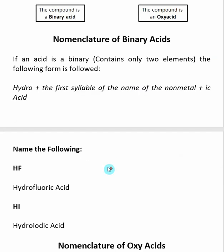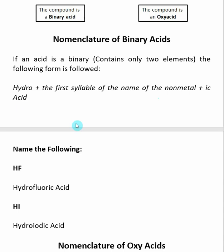The first type we're going to look at is binary acids. Like we said, it only contains two elements. The rules here are: the word 'hydro' comes first — this is going to be true for all binary acids. 'Hydro' just means hydrogen. Then the first syllable of the name of the nonmetal, the other element it's attached to, and then 'ic acid' at the end.